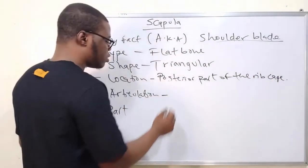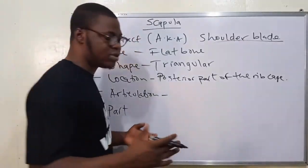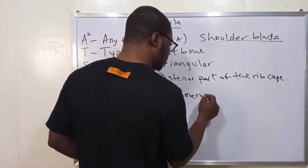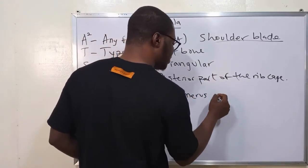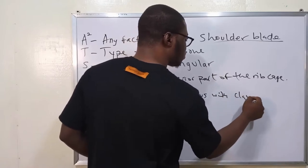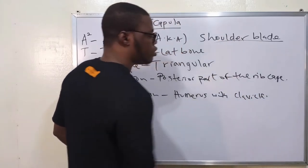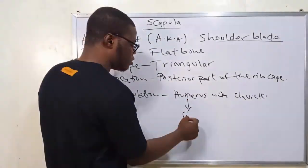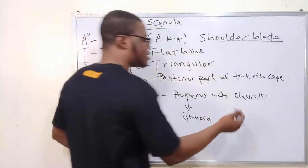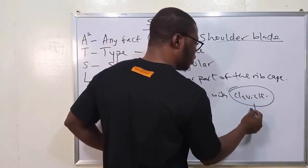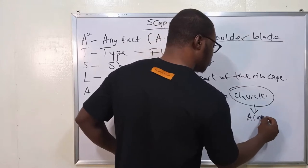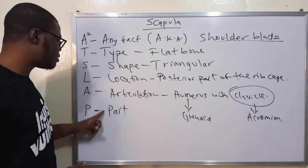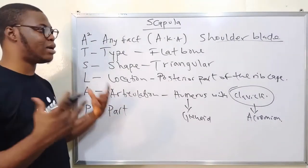Now the articulation: the scapula articulates with two bones majorly. The first one is the humerus, and also with the clavicle. It articulates with the humerus at a place called the glenoid cavity, and it articulates with the clavicle at the acromion process. Now we are going to be talking about the diagram and the parts — let me quickly rub off the board and then we go into the diagram of the scapula.